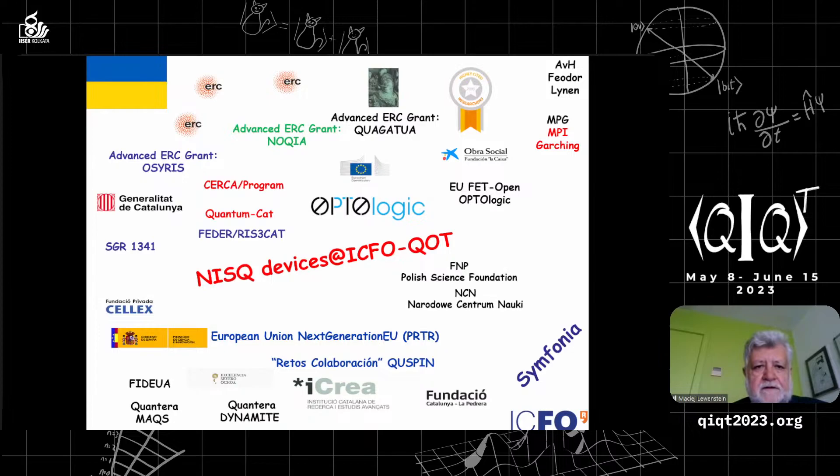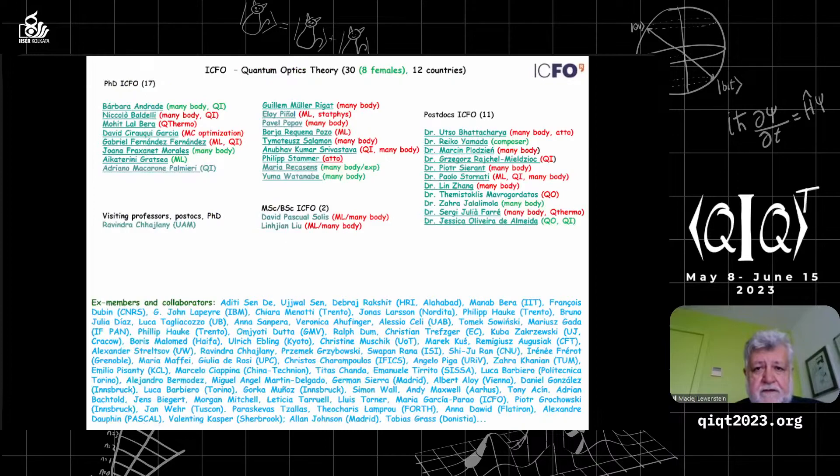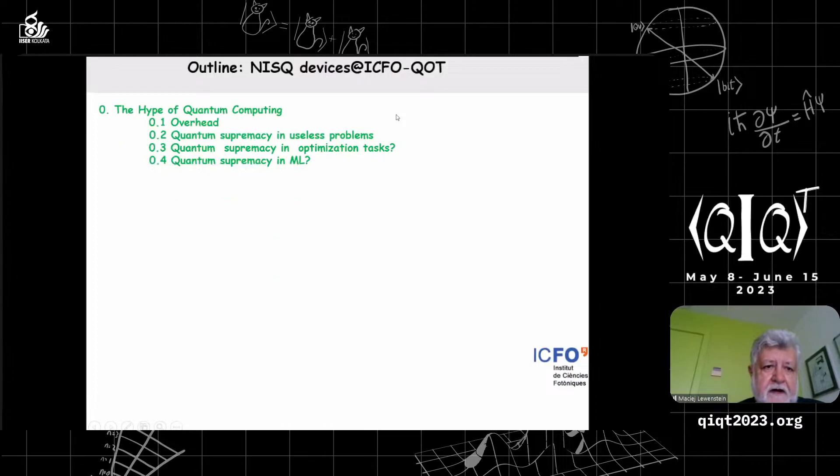I always start my talks with the logos of agencies that finance our research at ICFO. There are many agencies so the group is huge, about 30 people nowadays, 17 PhD students and 11 postdocs, and there are many Indian members of the group. We collaborate with many friends all over the world including people in India quite a lot.